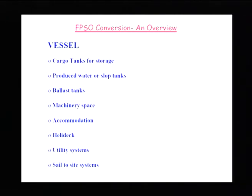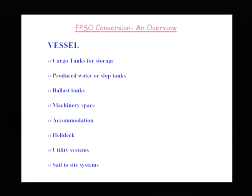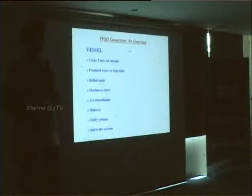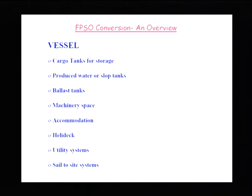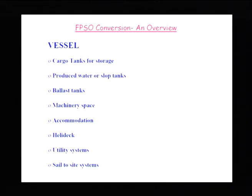That is the description of works involved during the conversion process of a tanker into an FPSO. What we do for the vessel: cargo tanks are prepared for storage, with modifications to lines inside the tanks. We add double separation valves, and sometimes the suction pipe position is elevated — depending on the quality of oil expected, to avoid sucking dirty oil. Produced water modification of the slop tanks is done to use them as water separation units, essentially a gravity sedimentation system. Ballast tanks — most converted tankers don't have them, but sometimes one or two are added just for stability during cargo operations.